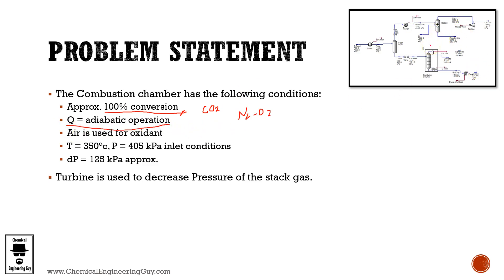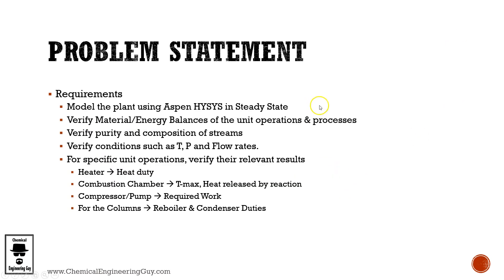What we want is to take advantage of the high temperature in the turbine. The inlet temperature is 350°C, pressure is about 405 kPa, and there is a pressure drop of 125 kilopascals. The turbine is used to decrease the pressure of the stack gas and recover some useful work.